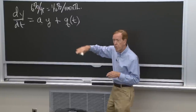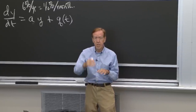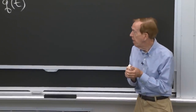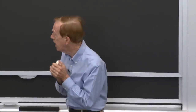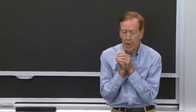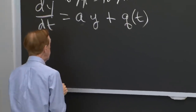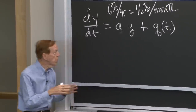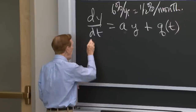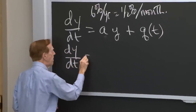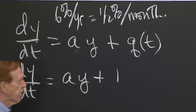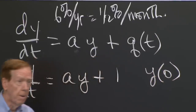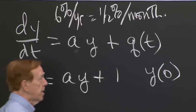For second order equations like oscillation, or for a system of several equations coupled together, constant coefficients is where you can get a formula. So how to solve that equation? Let me take first of all a constant source — I think of q as the source term. So I'll take this example: dy/dt = ay + 1. How do you find y(t) to solve that? You start with some initial condition y(0) — that's the opening deposit you make at time 0.